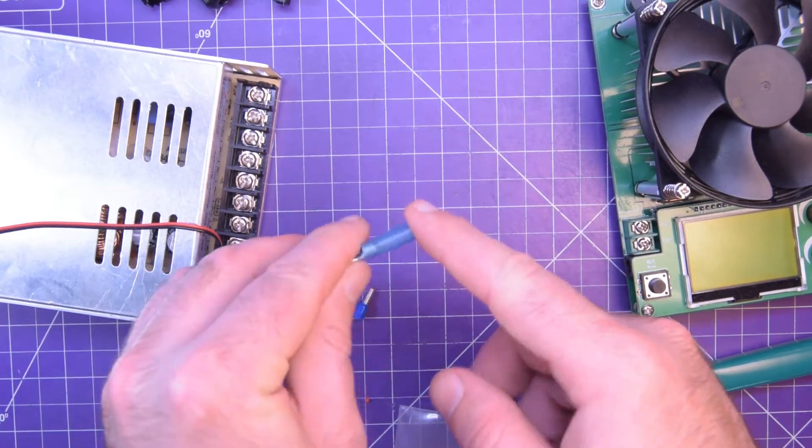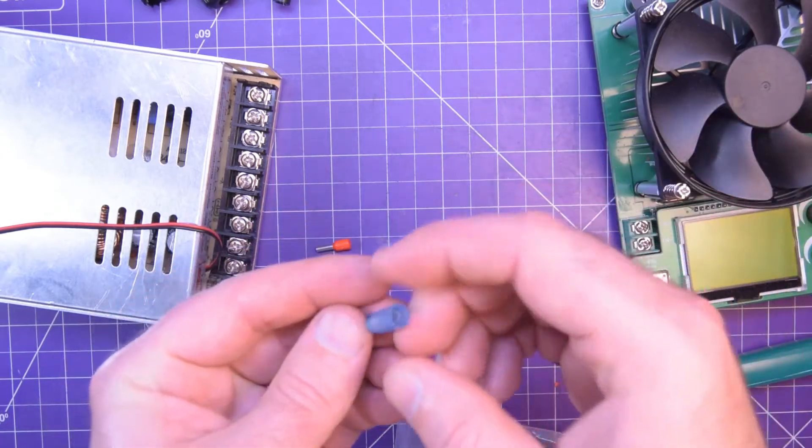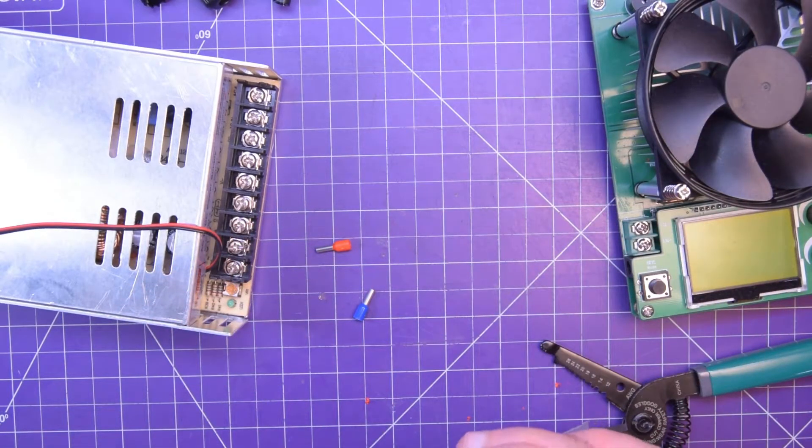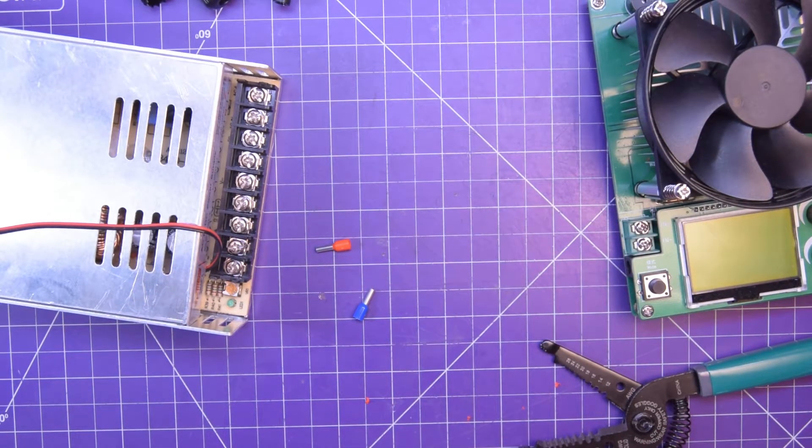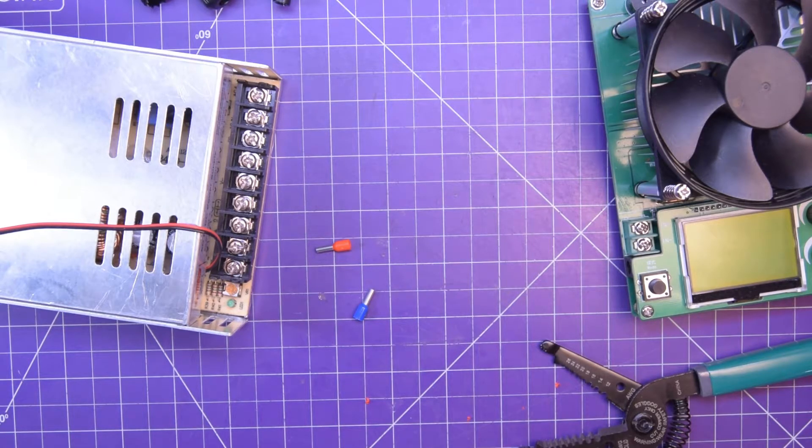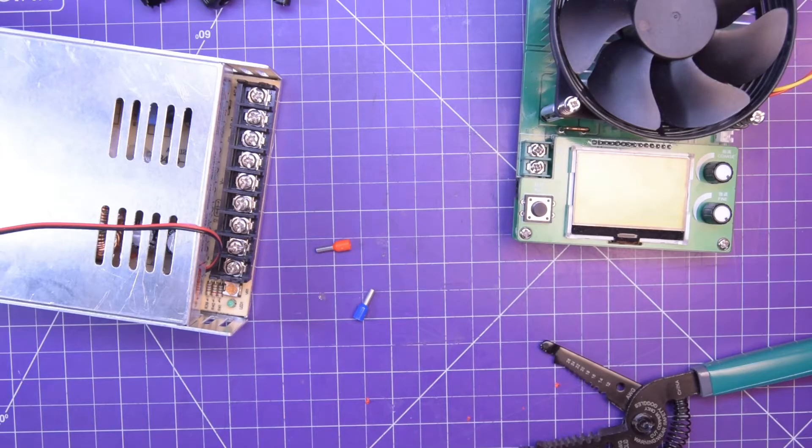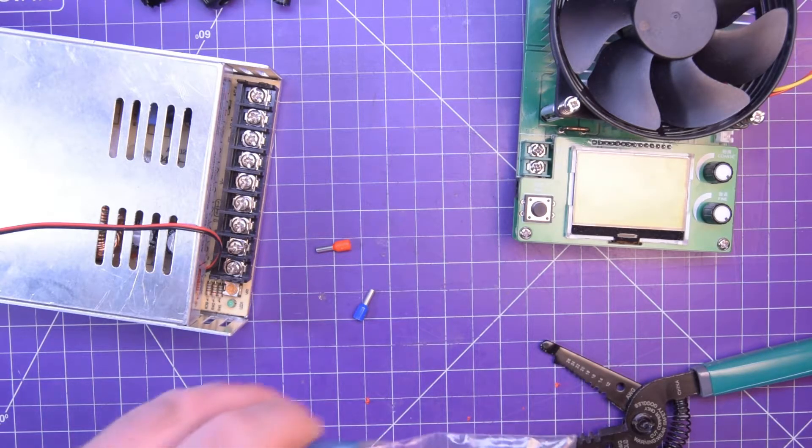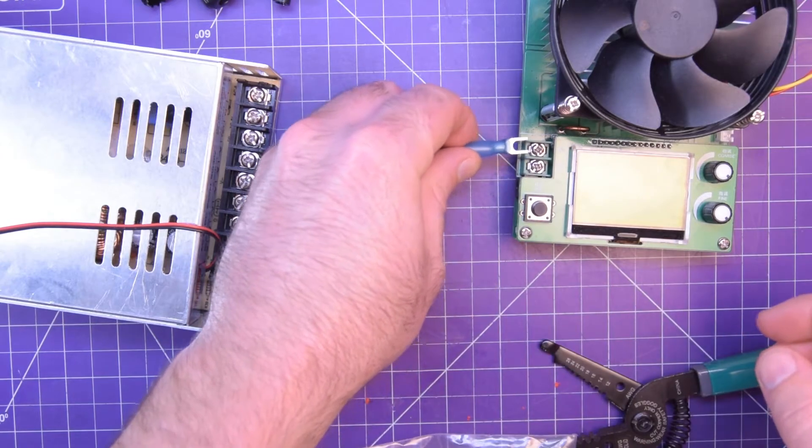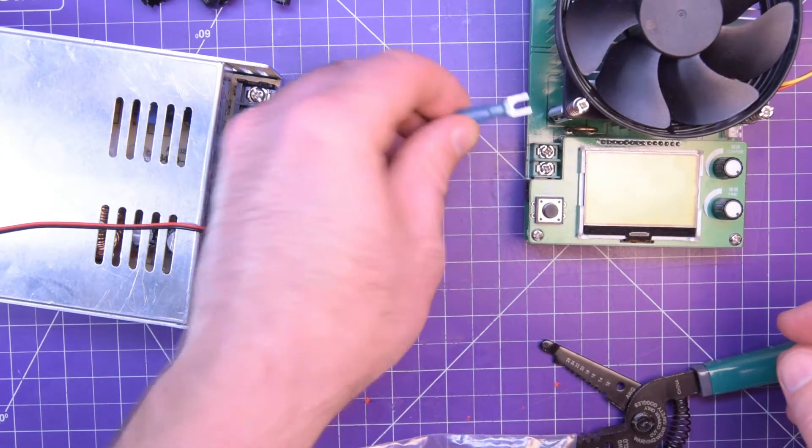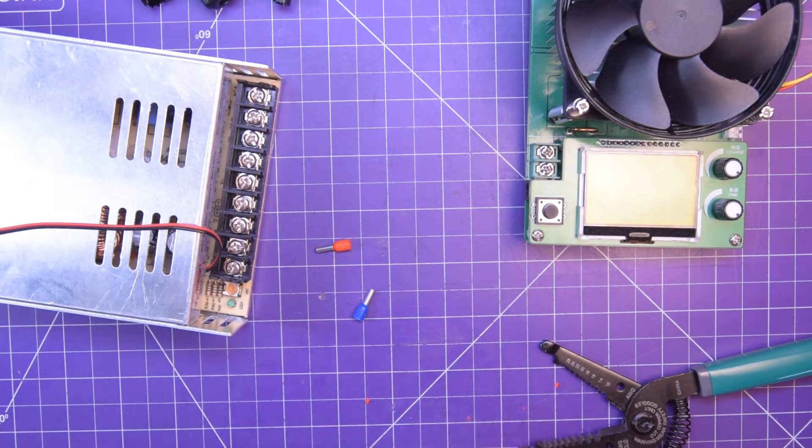They also have the heat shrink sleeving built in and they have the adhesive on the inside so they're sort of waterproof. So yeah, I wanted to do that, but this is what I'm going to be testing the solar panels with and it has screw terminals that are non-standard. So that is a no.